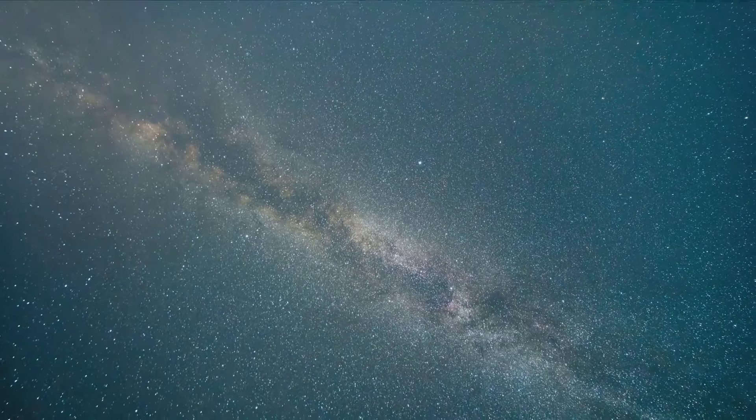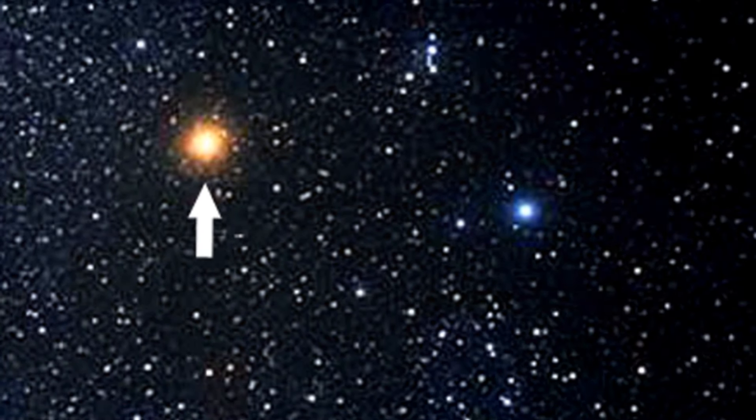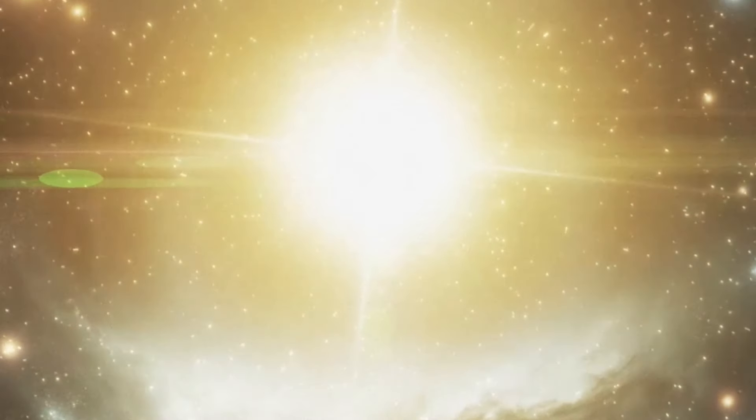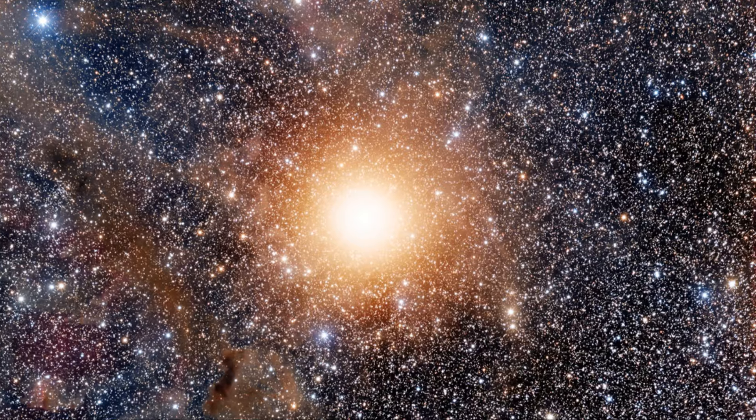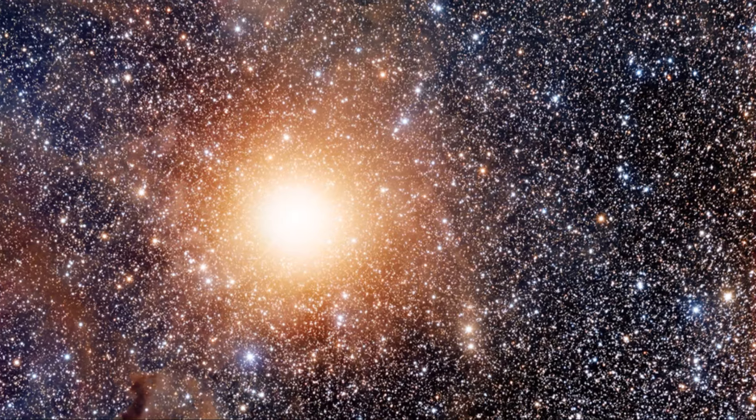Betelgeuse is quite far from us, about 640 light-years away. That's a safe distance, astronomically speaking, when it comes to the devastating effects of a supernova. To put this into perspective, light from Betelgeuse takes 640 years to reach us. This means that if Betelgeuse were to explode today, we wouldn't see it until 640 years from now. This vast distance ensures that the harmful radiation and shockwaves from the explosion won't reach Earth.